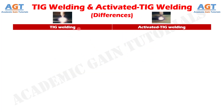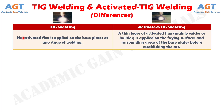Let's look into the basic differences between TIG welding and activated TIG welding in a tabular form. Difference number 1: in TIG welding, no activated flux is applied on the base plates at any stage of welding, whereas in activated TIG welding, a thin layer of activated flux — mainly oxides or halides — is applied on the faying surfaces and surrounding areas of the base plates before establishing the arc.